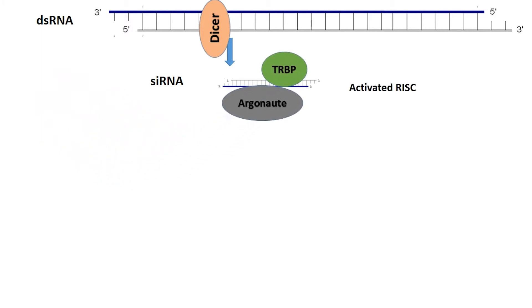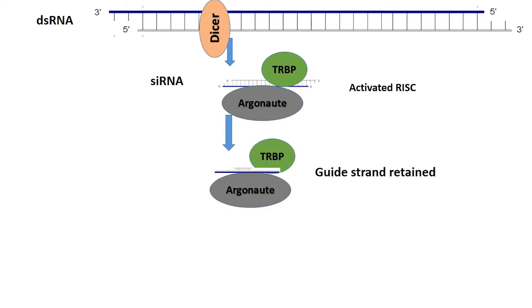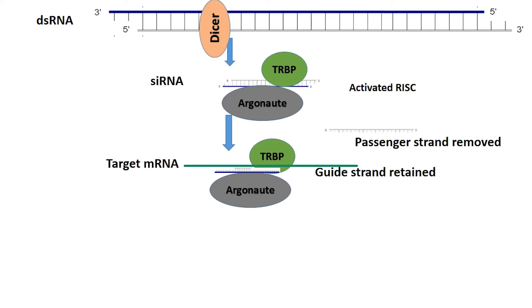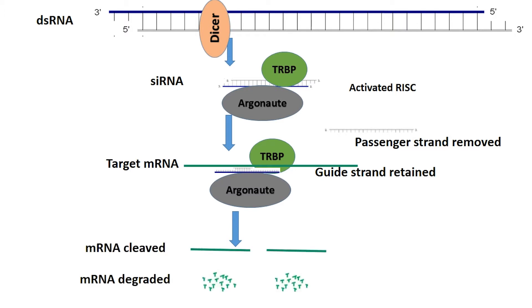One strand of the siRNA, the guide strand, is integrated into the RISC, while the other passenger strand is degraded. The RISC complex uses the bound guide siRNA to recognize and bind complementary mRNA molecules — the targets. The Argonaute protein of the complex gets activated and cleaves and degrades the target mRNA, resulting in substantially decreased levels of protein translation, effectively turning off the gene.